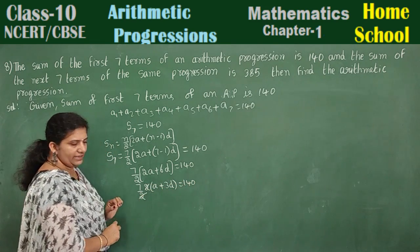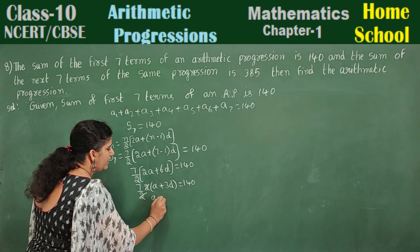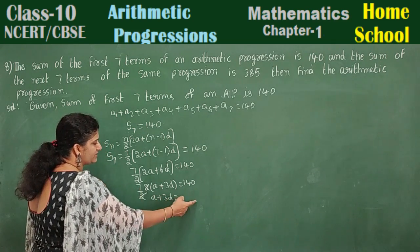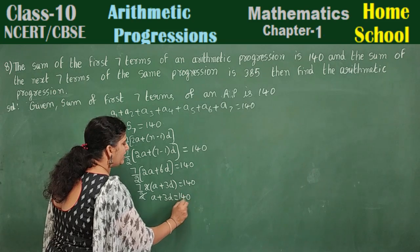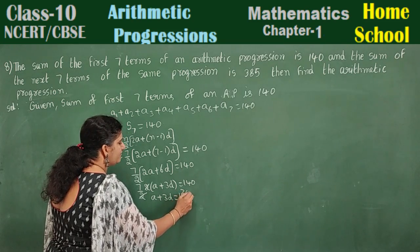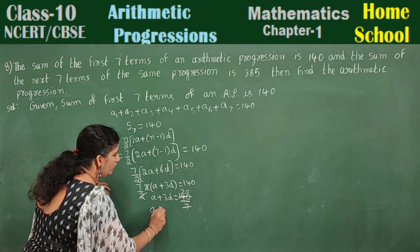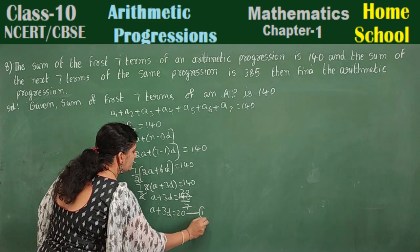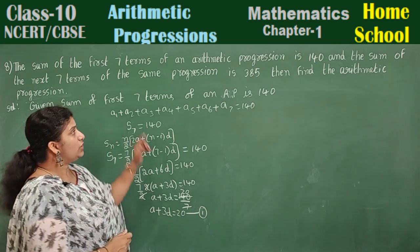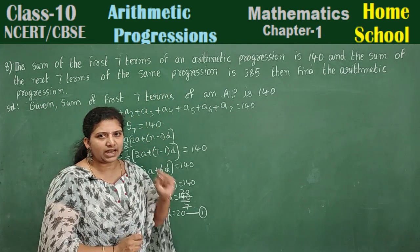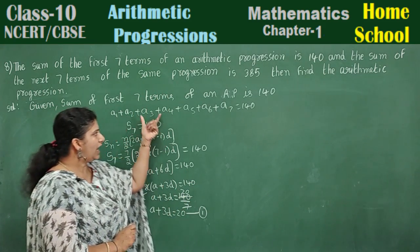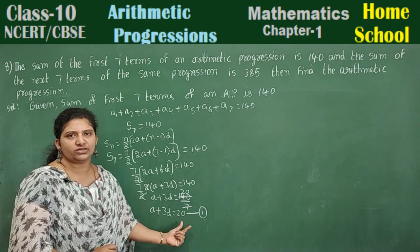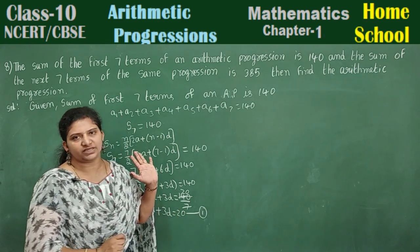After cancellation, a plus 3d is equal to 140 divided by 7, which gives a plus 3d is equal to 20. Mark this as the first equation. Using only the first line of the question, we have derived equation 1: a plus 3d is equal to 20.